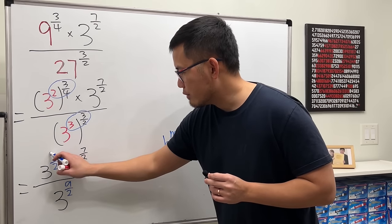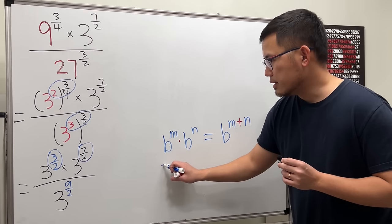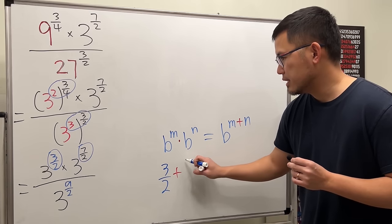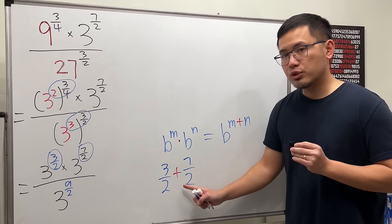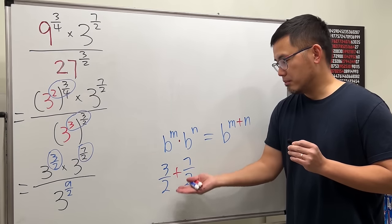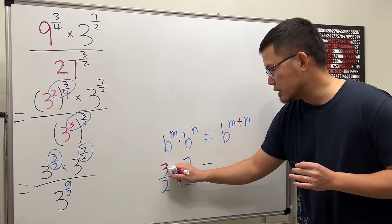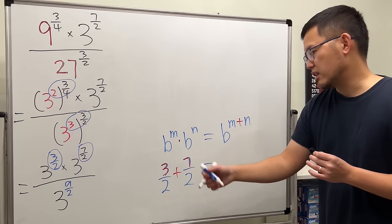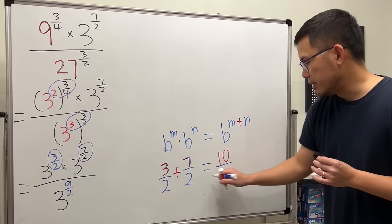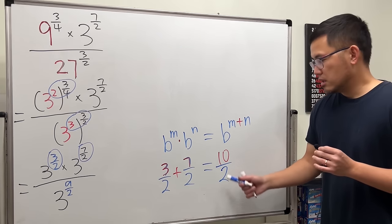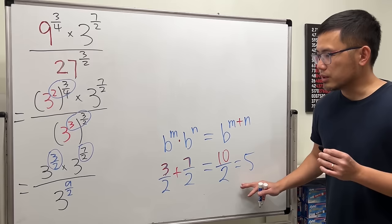So here we have to work out 3 over 2 plus 7 over 2. We're adding fractions — we need the same denominator, and they already have the same denominator, so we just add the numerators: 3 plus 7 is 10 over the same denominator 2. Then 10 divided by 2 equals 5.